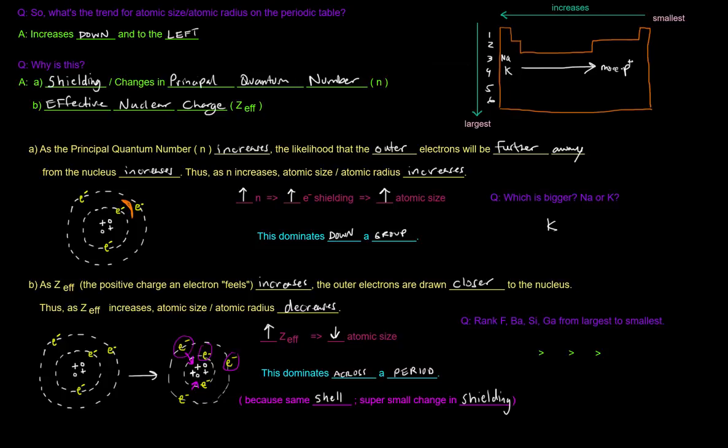So if we want to rank fluorine, barium, silicon, and gallium from largest to smallest, well, if we're going from largest to smallest, we want to go from basically the bottom left to the upper right. So I'm going to erase this portion here.